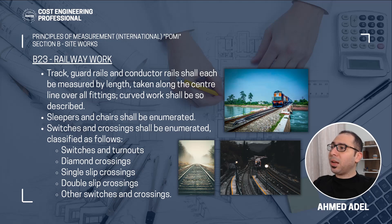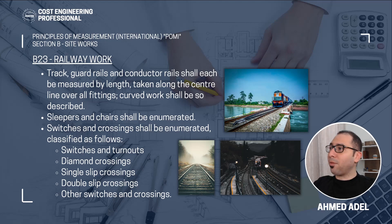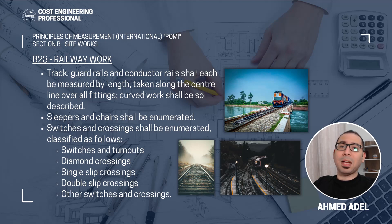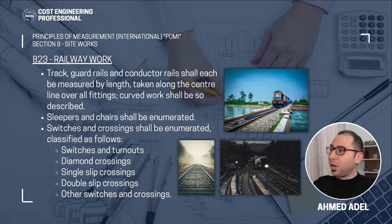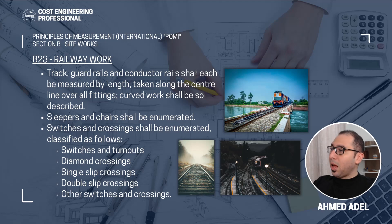Subsection B23 is railway work. Track, guard rails, and conductor rails shall each be measured by length taken along the center line over all fittings, and curved work shall be so described, as curved work is more expensive than straight work. Sleepers and chairs shall be enumerated. Switches and crossings shall also be enumerated, classified as: switches and turnouts, diamond crossings, single slip crossings, double slip crossings, and any other switches and crossings.